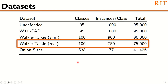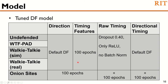For the experiments, we used five different datasets. Four of them are from prior work, and walkie-talkie real is from our own implementation of walkie-talkie. We used the deep fingerprinting model for our experiments across different settings. For most settings, we used the default DF model, though there are some changes across different settings. For example, for raw timing, we reduced the dropout rate to 0.4 and used only the ReLU activation function, and did not use batch normalization. For all experiments with timing features and onion sites, we used 100 epochs instead of the default 30 epochs.